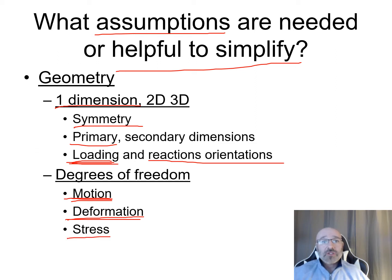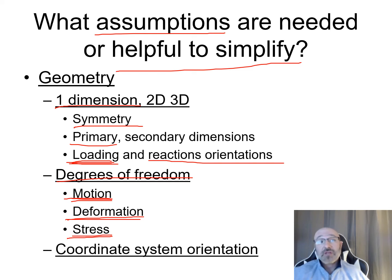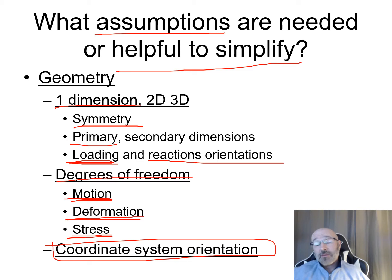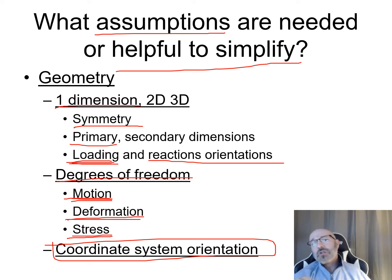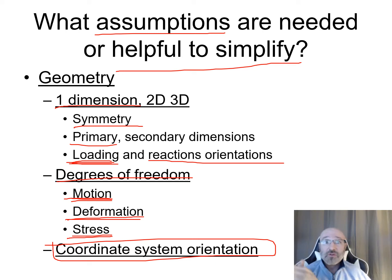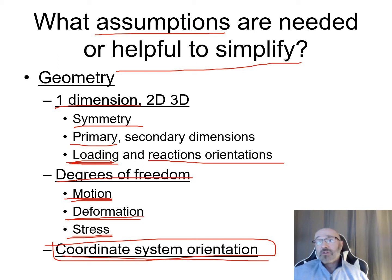One important assumption area is the coordinate system orientation. In many problems you're allowed to specify it, and how you choose that orientation can greatly simplify the solution. If a majority of forces act at a 30-degree angle up a slope, choose your coordinate system skewed so positive X goes up that slope. Choosing coordinate system orientation wisely is a key simplification strategy.